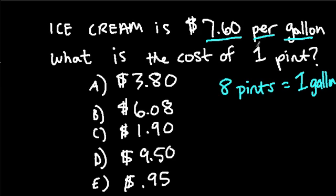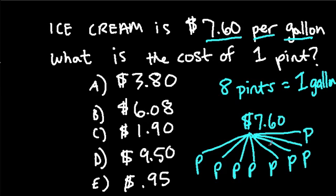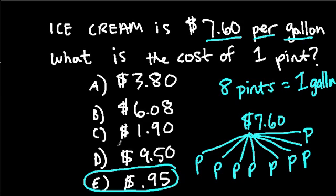If you spent $7.60 on a gallon of ice cream, one pint will be one-eighth of that. So that gallon is split into 8 little pints. What you do to find out what one pint would be is take $7.60 and divide it into 8 groups. I know right away the answer has to be E — without doing any calculations, just using simple reasoning. If we have $7.60 and split it into 8 groups, each group will be less than $1. All of the other answer choices are more than $1.